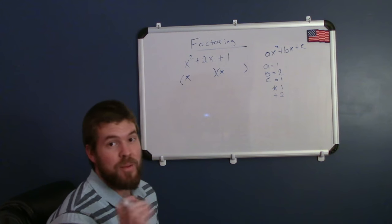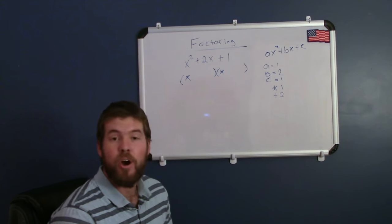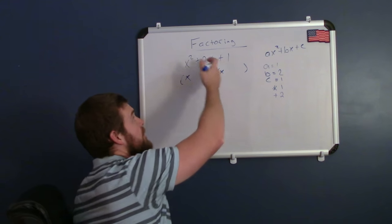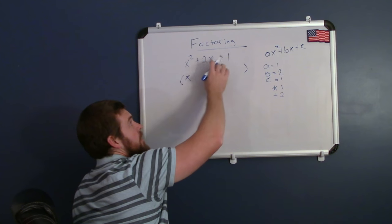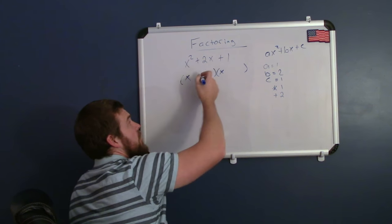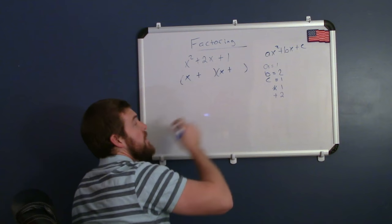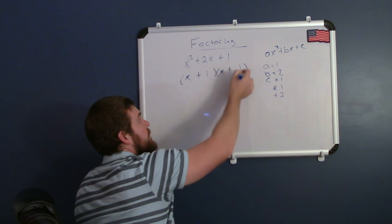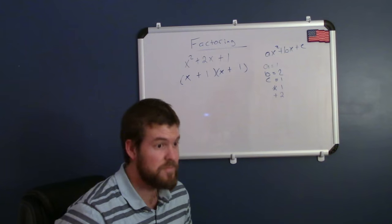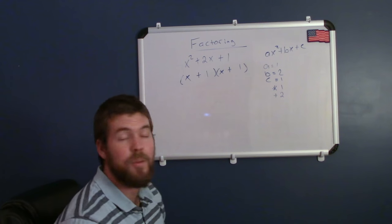The only two numbers that multiply to be 1 are 1 and 1. All our numbers up here are positive, the expression up here is all positive, so all plus signs. So 1 and 1 will go right here. Those two numbers multiply to be 1 but add to be 2.